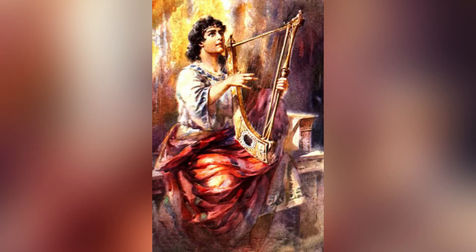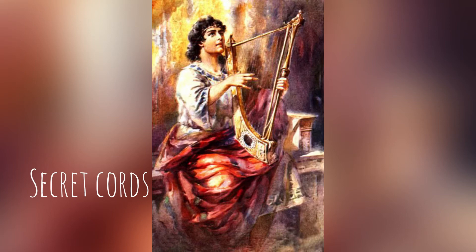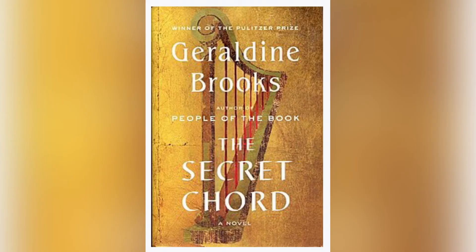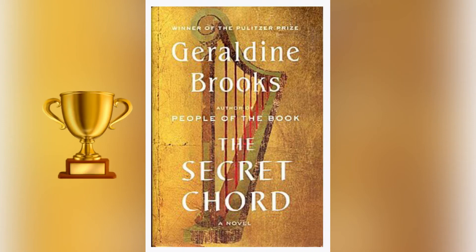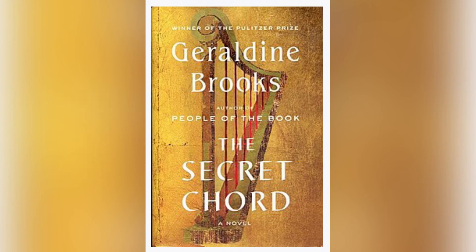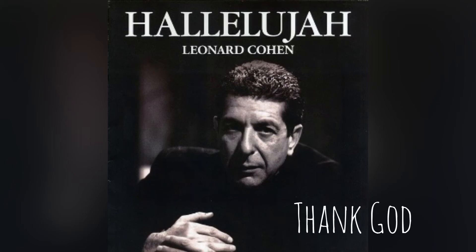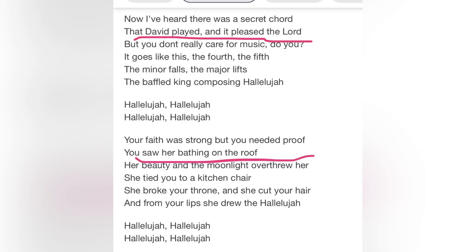According to the Old Testament, King David could play a musical instrument so well, and he knew some secret chords that pleased the Lord, which made him God's beloved son. 'The Secret Chord' is also the name of a book by Geraldine Brooks, the winner of the Pulitzer Prize, in which she tells the story of the life of King David. The name of the book was taken from the famous song by Leonard Cohen called 'Hallelujah,' which translates from Hebrew as 'Thank God,' where the first verse begins with: 'Now I've heard there was a secret chord that David played and it pleased the Lord.'